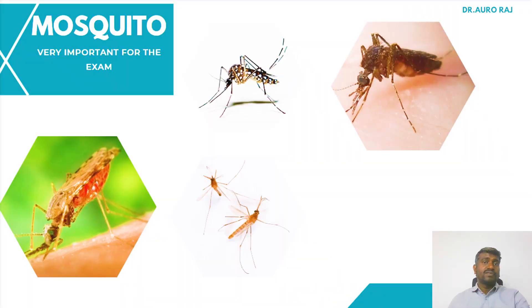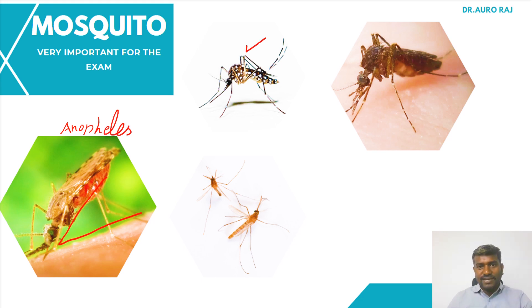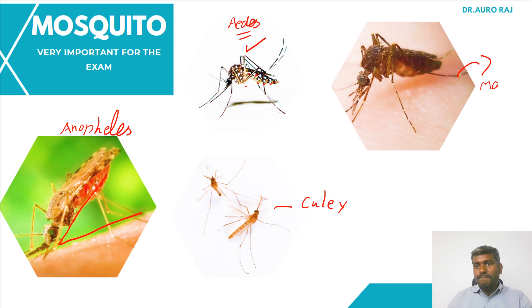Knowing mosquitoes is very important for the main exam. Let's revise them and look at the images. The first mosquito is sitting at a 45-degree angle — that is going to be our Anopheles. This mosquito is having tiger spots — that is classically our Aedes. Next, this is going to be Culex. And this one is going to be Mansonia.